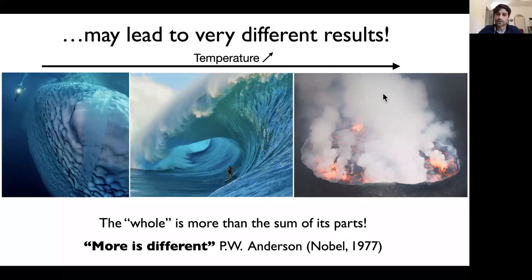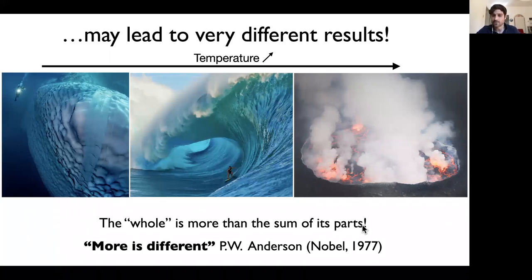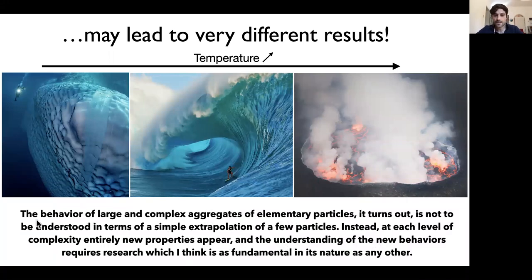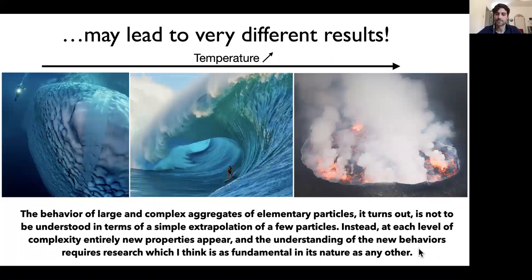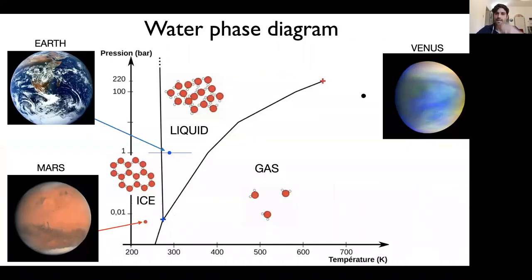At the microscopic level these systems look quite similar, but at the macroscopic level they have different mechanical and optical properties. The whole is more than the sum of its parts — or as summarized by Philip Anderson, Nobel Prize 1977: 'More is different.' What he means is really different at a fundamental level. The behavior of large and complex aggregates of elementary particles is not to be understood in terms of simple extrapolation of a few particles.